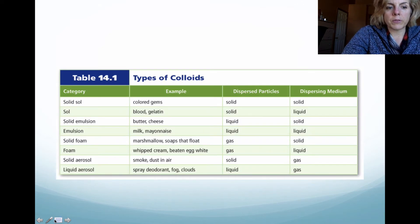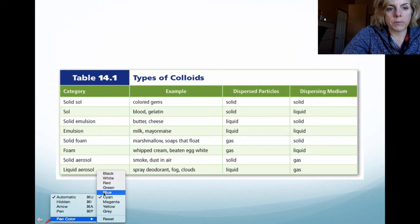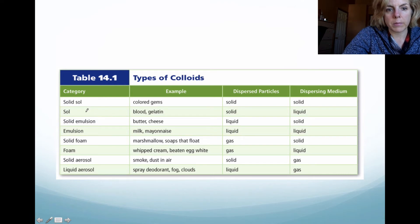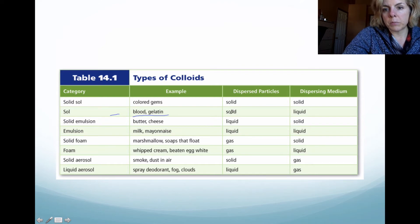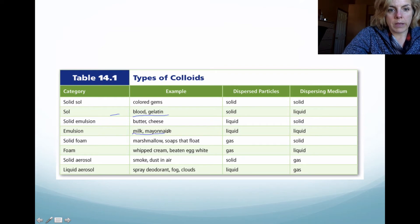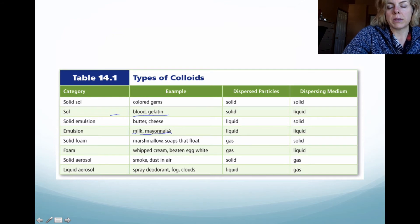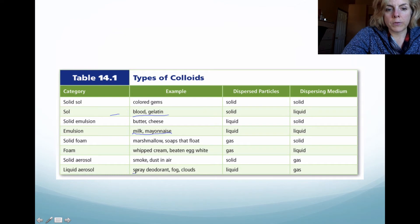Here are some different types of colloids, and you've probably seen a number of these before. Blood is an example of a colloid — it's a solid particle dispersed in liquid. Milk and mayo are considered colloids — it's a liquid within a liquid, usually egg mixed in with oil. Liquid aerosol: if you have spray deodorant or hairspray, notice that it's liquid particles dispersed in a gas.